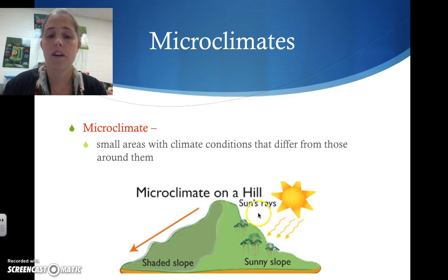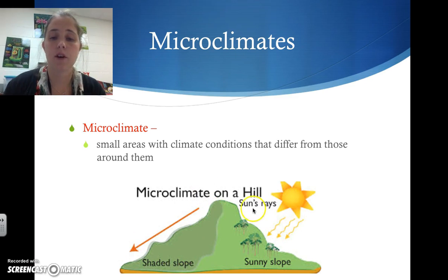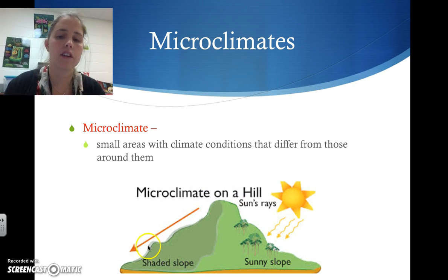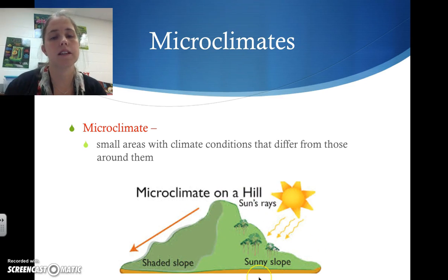For example, here we have a mountain, and on one side we get a lot more sunshine than on the other side. So on the sunny side we're going to have a lot more trees and vegetation than on the shaded slope. The shaded slope would be a microclimate because it is different from the climate around it.